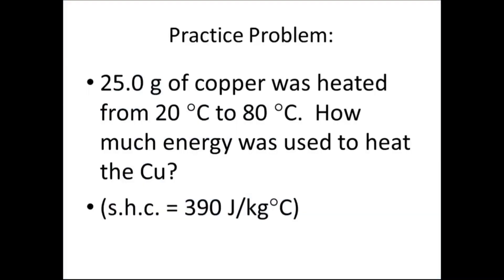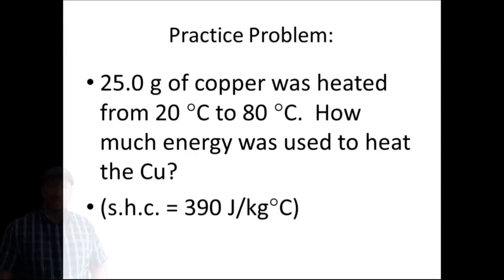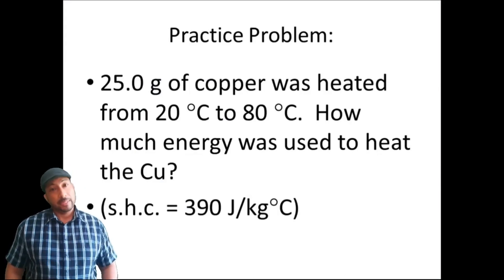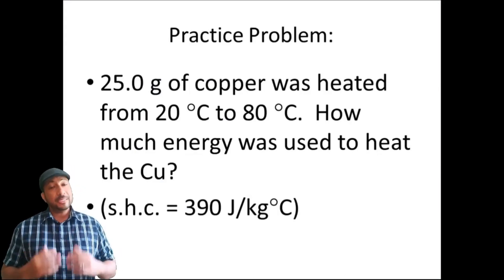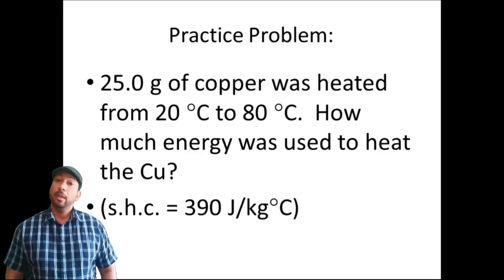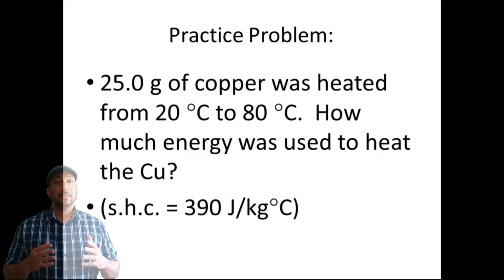Here's our practice problem for you. 25.0 grams of copper was heated from 20 degrees Celsius to 80 degrees Celsius. How much heat energy was used to warm up that copper? Use the specific heat capacity of copper to be 390 joules per kilogram degree Celsius. Pause the video at this point when you're finished working it out, then proceed to unpause it.